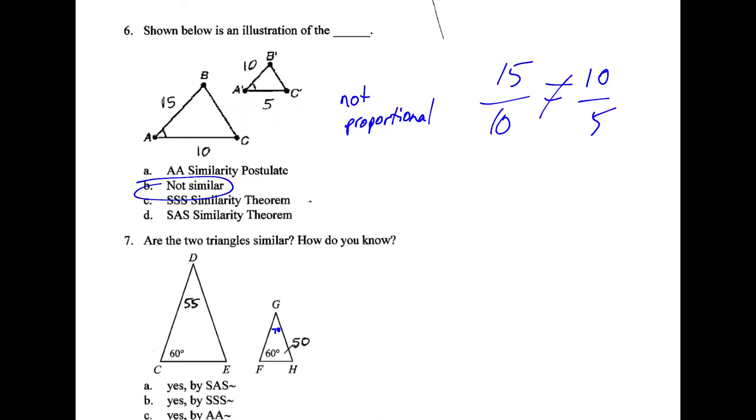We know that number 6 is not proportional, so it's not similar. 15 over 10 is not a similar scale factor as 10 over 5. B, not similar.